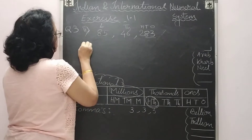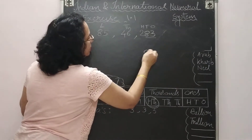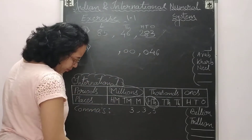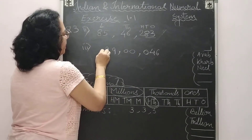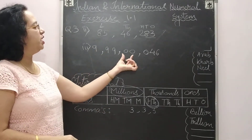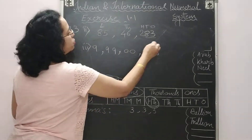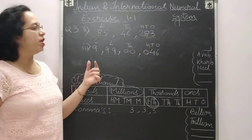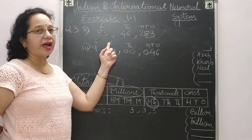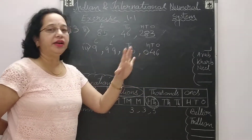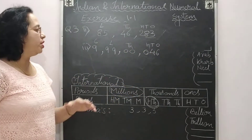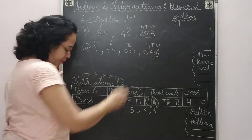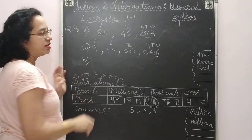For the second example, starting from the right hand side: last three digits are 2, 8, 3 — put comma — then 6, 4 — put comma — then 5, 8. Writing down the places: ones, tens, hundreds, this is your thousands, this is your lakhs. So we write: eighty-five lakhs, forty-six thousand, two hundred eighty-three.